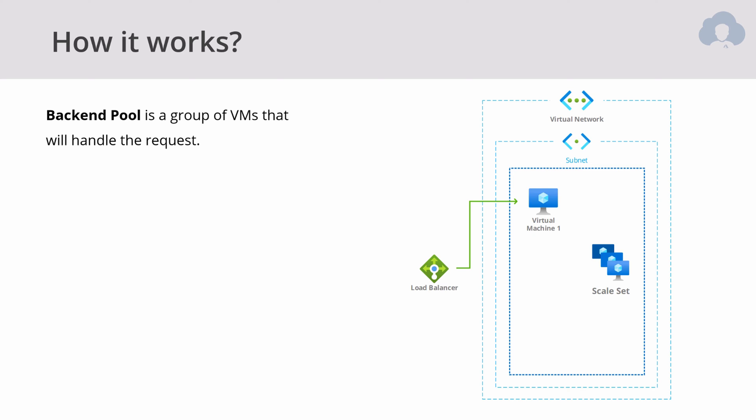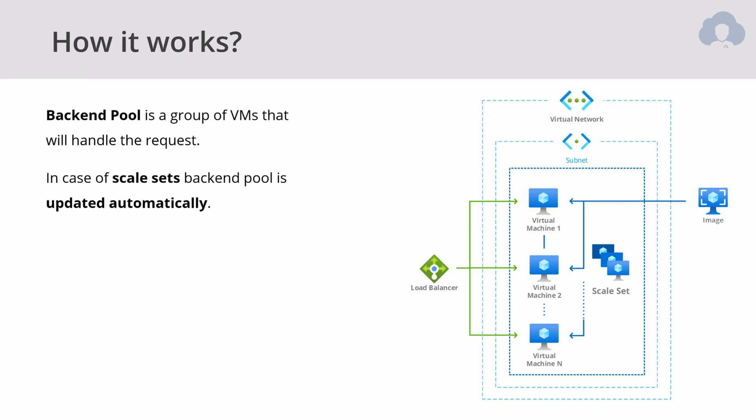A typical scale set is always located within a subnet and a virtual network. You create a load balancer that will direct incoming traffic to virtual machines grouped into something called a back-end pool. This is a group of virtual machines that will handle your incoming requests, and whenever your scale set scales and adds more virtual machines, it will automatically update the load balancer.